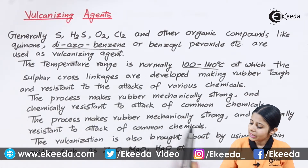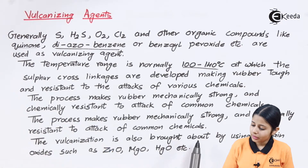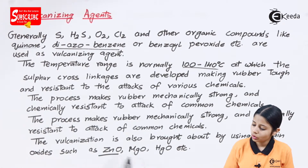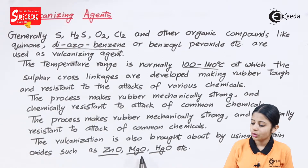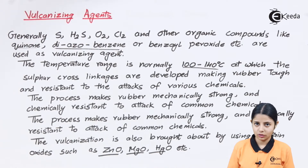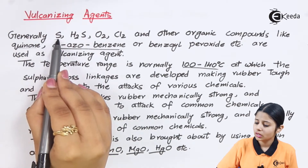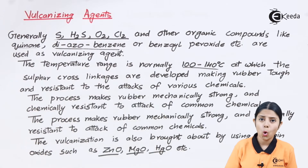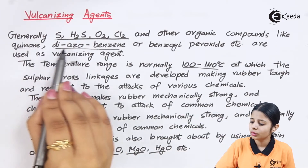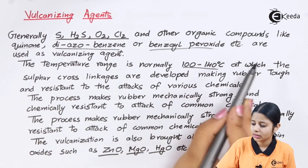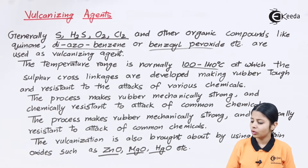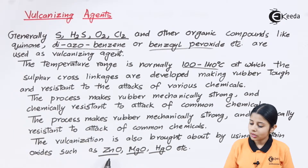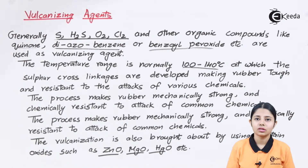The process makes rubber mechanically strong and chemically resistant to the attack of common chemicals. Vulcanization is also brought about using certain oxides such as ZnO (zinc oxide), MgO (magnesium oxide), and HgO (mercuric oxide). So we can use sulfur, H2S, O2, Cl2, organic agents like quinone, diazobenzene, and benzoyl peroxide, or metal oxides like zinc oxide, magnesium oxide, and mercury oxide as vulcanizing agents.